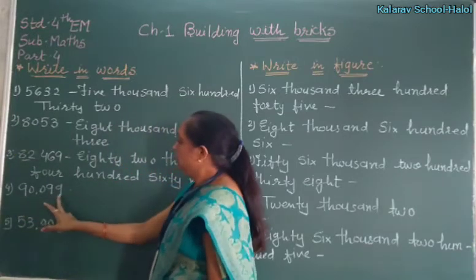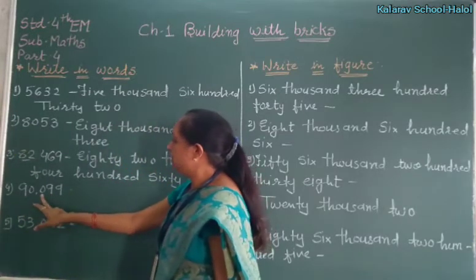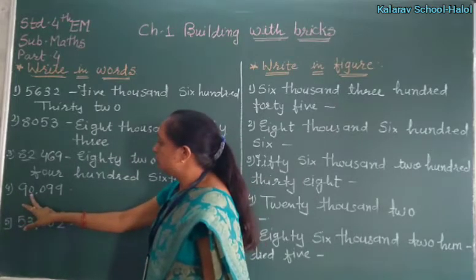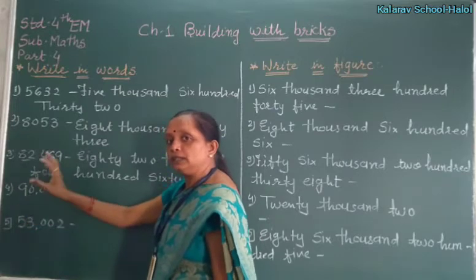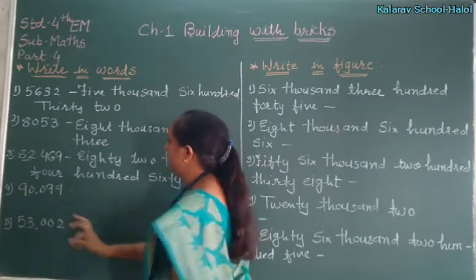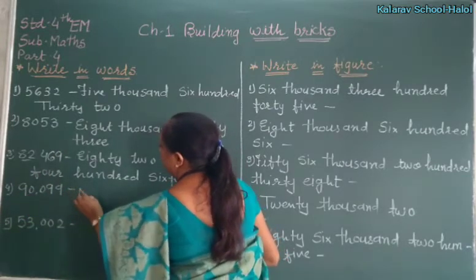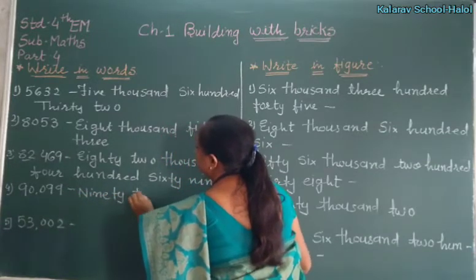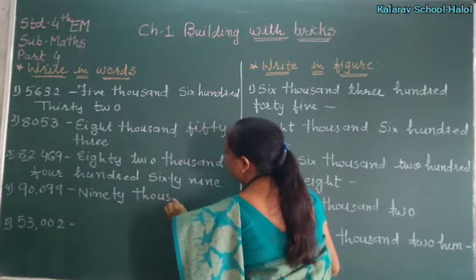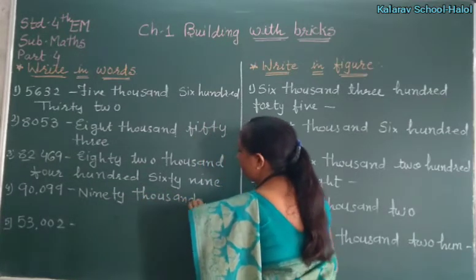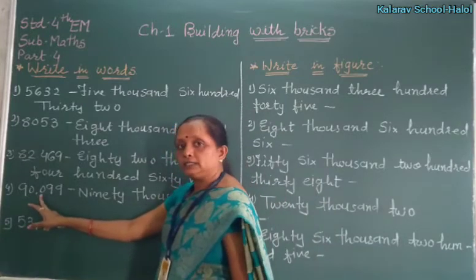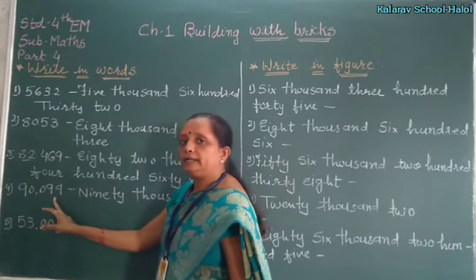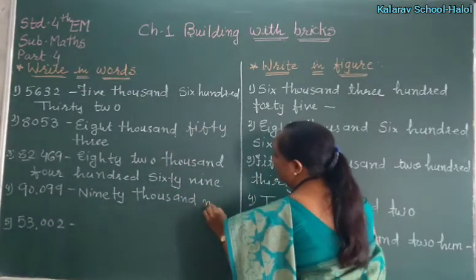Now, see children — ones, tens, hundred, thousand, ten thousand. Here, thousands is nothing, but ten thousands and thousands together make ninety thousand. In hundreds is zero, so don't write hundred. Direct ninety-nine. Ninety thousand, ninety-nine.